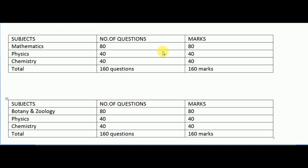Let's begin this video without any delay. Coming to the exam pattern for PCM — that is Physics, Chemistry and Mathematics — for Mathematics there will be 80 number of questions. In the MSET paper, 80 questions will be asked from Mathematics, each question carrying one mark, so 80 questions and 80 marks.